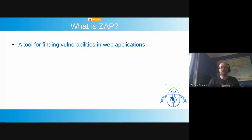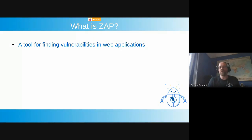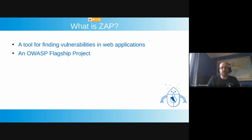ZAP is a tool for finding vulnerabilities in web applications. It does find some known vulnerabilities with standard packages, but it's much more focused on finding new and interesting vulnerabilities in custom applications. It's not particularly targeting WordPress or anything like that — it's custom web applications. It is an OWASP flagship project, meaning it's among the most mature projects and really good places for people to start when they're new to security.